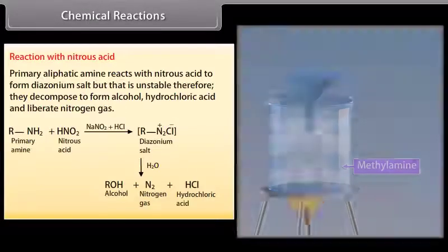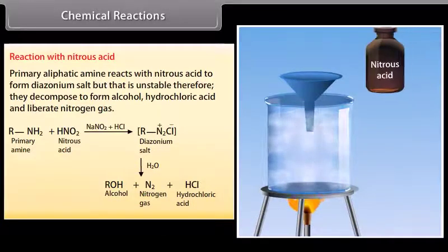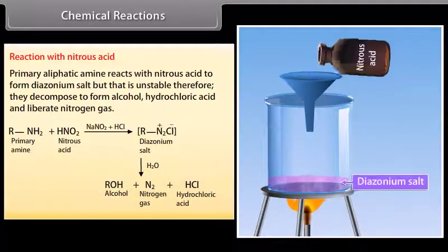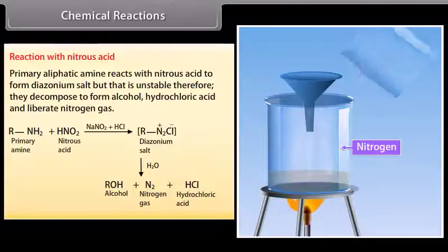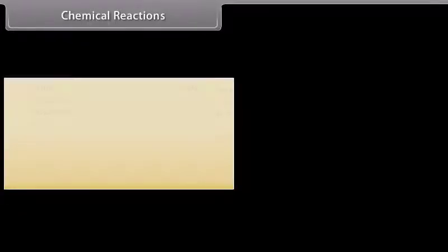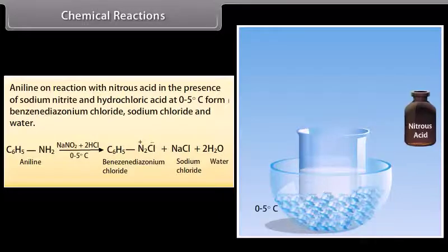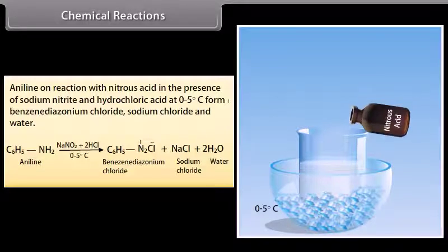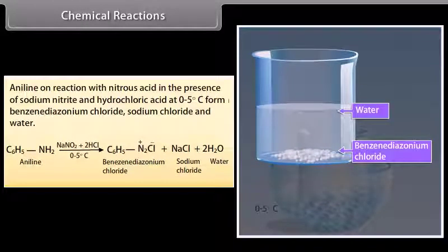Reaction with nitrous acid: Primary aliphatic amines react with nitrous acid to form a diazonium salt, but it is unstable. Therefore, they decompose to form alcohol, hydrochloric acid, and liberate nitrogen gas. Aniline, on reaction with nitrous acid in the presence of sodium nitrite and hydrochloric acid at 0–5°C, forms benzene diazonium chloride, sodium chloride, and water.